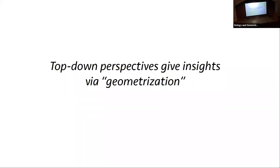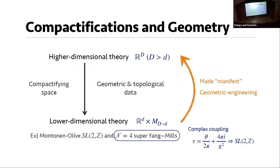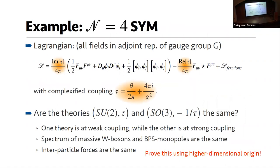We definitely learned this is not possible to detect just by looking at so-called invariants alone — it's not enough to prove they are the same. Instead, we can use the higher-dimensional origin of the coupling constant tau to relate these two. This is the top-down perspective that gives insights via geometrization. The purpose of this goal today is to answer my question using this approach, and I thought it was perfect since this conference is called Strings and Geometry.